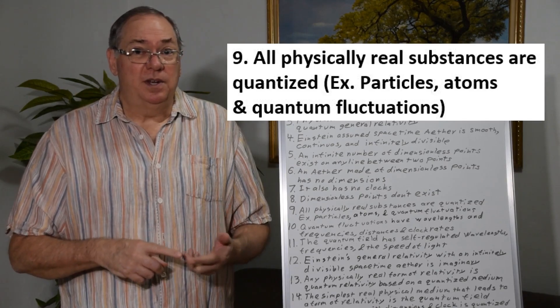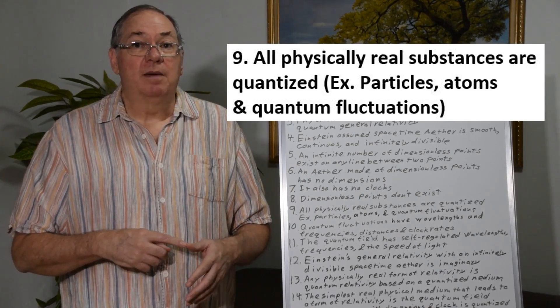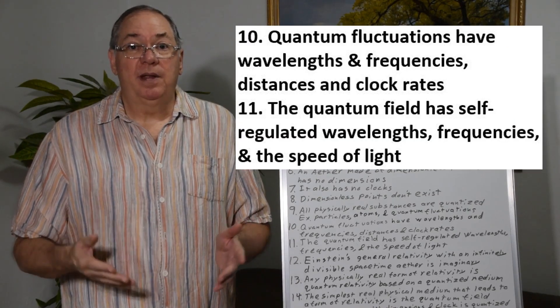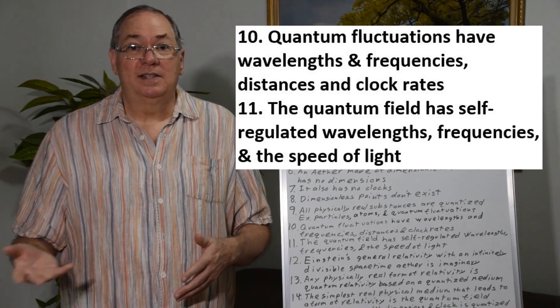You can think about particles. You can think about atoms. You can think about molecules. You can think about quantum fluctuations. Quantum fluctuations have wavelengths and frequencies which give them properties of physical dimensions and time rate.